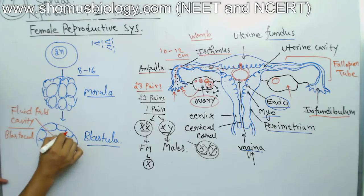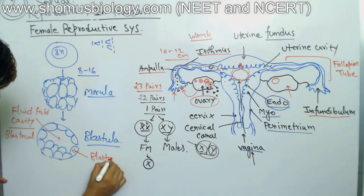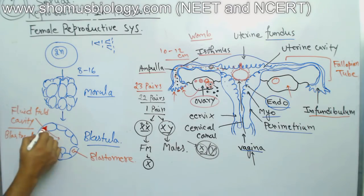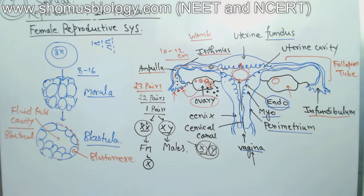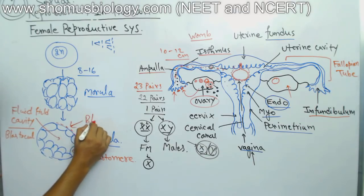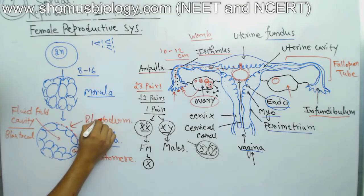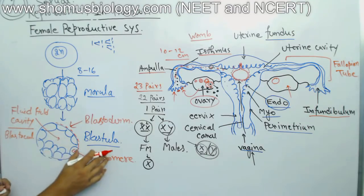The fluid-filled cavity is known as the blastocoel. Each individual cell of the blastula stage is known as a blastomere, and the outer membrane that covers the blastula is known as the blastoderm. So blastoderm, blastocoel (fluid-filled cavity), and blastomeres (the independent cells) are the three key components.